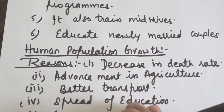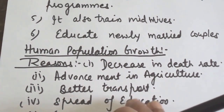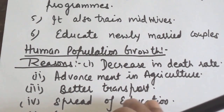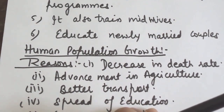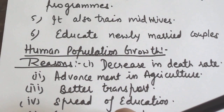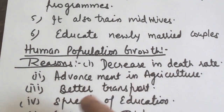Control of communicable diseases such as plague and cholera, as well as decline in the incidence of dreaded diseases like tuberculosis and malaria, have reduced the death rate and increased the average human lifespan.